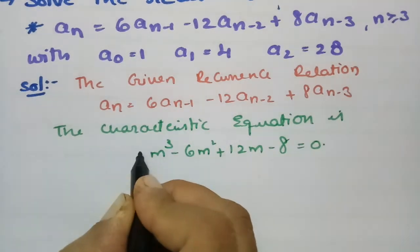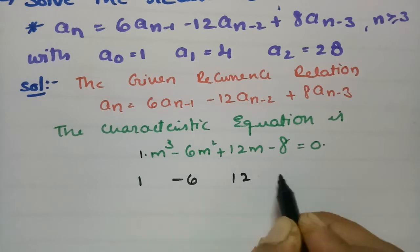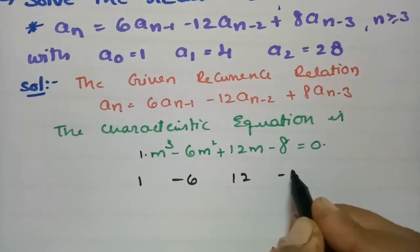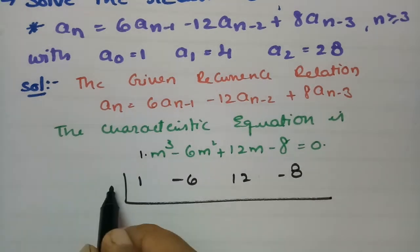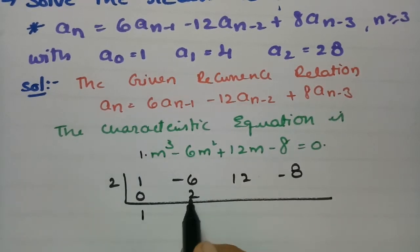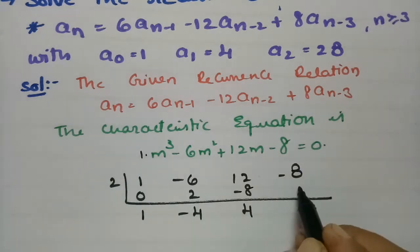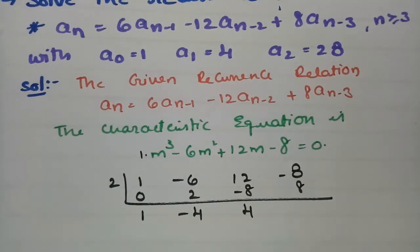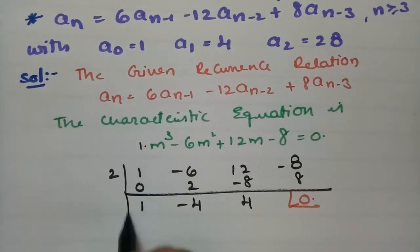For finding the factors, the coefficient of m³ is 1, the coefficient of m² is -6, the coefficient of m is 12, and the constant is -8. I am going to check with m = 2 using synthetic division: 1, then 2 once gives 2, and combining with -6 gives -4, and multiplying by 2 gives -8, which with 8 becomes 0.